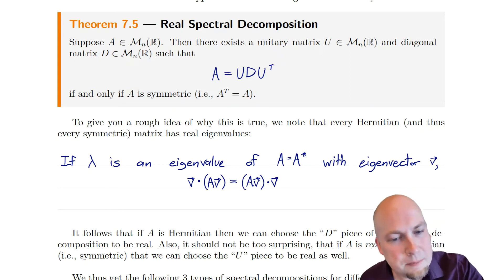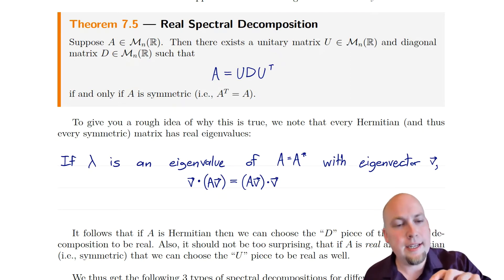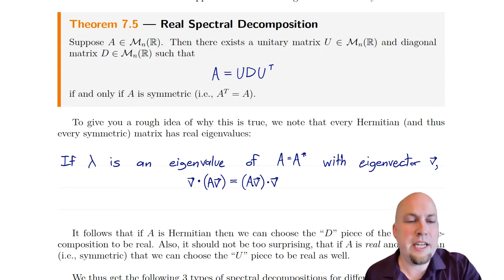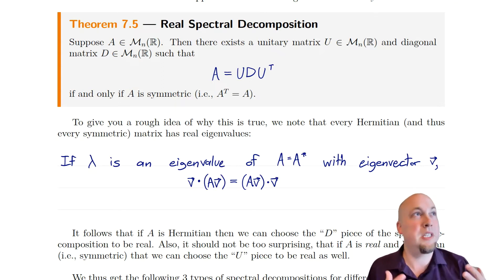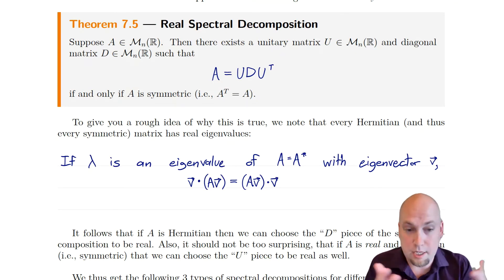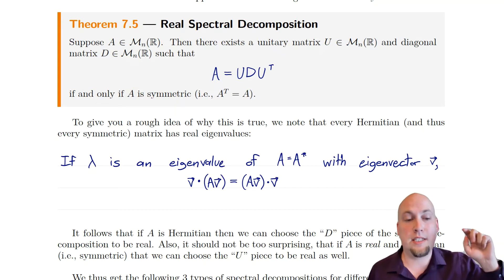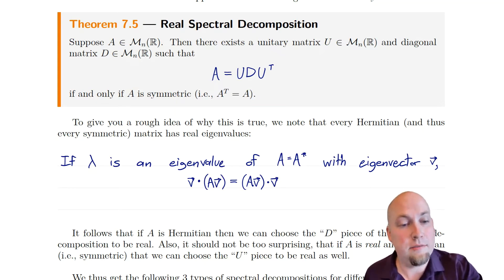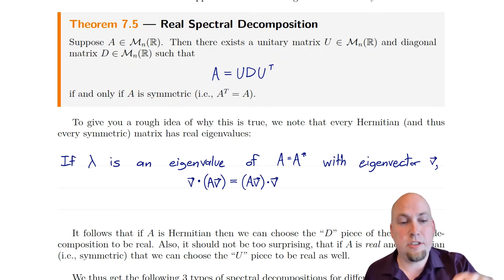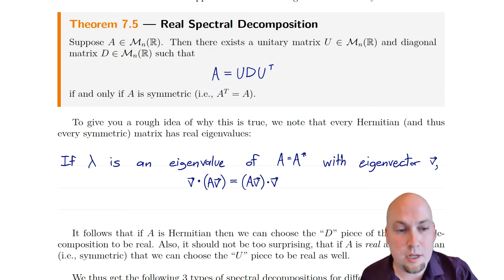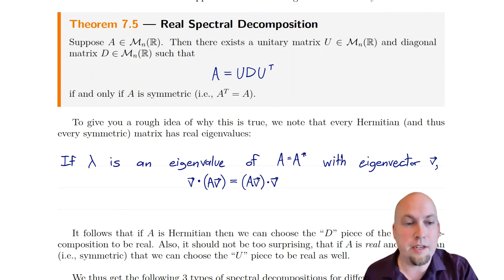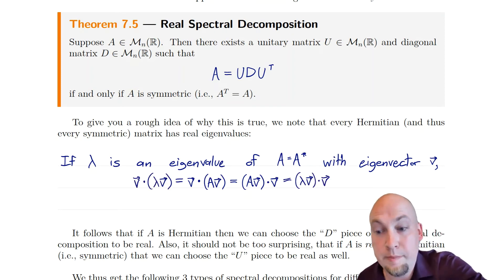If we compute V dotted with AV, because our matrix is Hermitian, when we pull A over to the other side of the dot product, nothing happens. The defining property of the adjoint or conjugate transpose is that you can pull A over to the other half of the dot product and it becomes A star. But because A equals A star, you get the exact same matrix whether it's on the left or right half of the dot product. That's where we use Hermitianness of A.